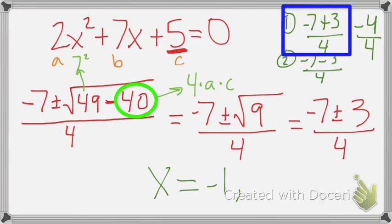Alright, and then on the bottom one, we got negative 7 minus 3. Okay, that's negative 10. And then we got negative 10 divided by 4. And so, for fractions, we just want to reduce them.